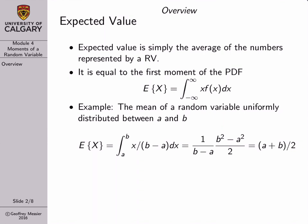As a bit of notation, whenever we take the average of a random variable, I'll refer to it as either average or expected value — they mean the same thing. The notation I'm going to use is E with curly brackets, and inside is whatever we're taking the average of. The expected value is an operator, and to calculate it for a continuous random variable, we multiply the PDF by the variable of integration and integrate from minus infinity to plus infinity.